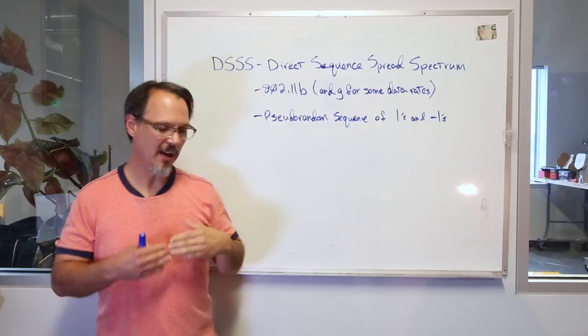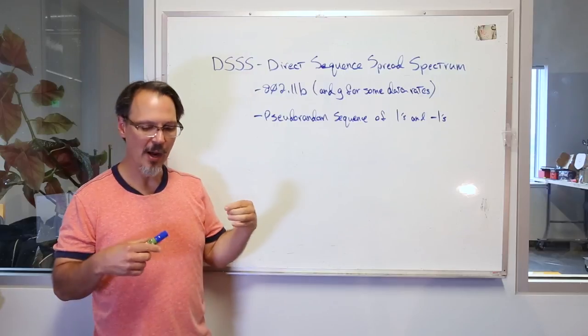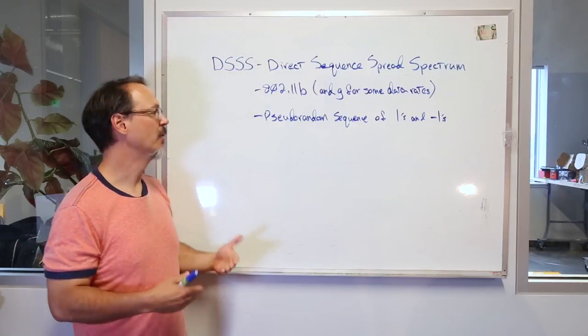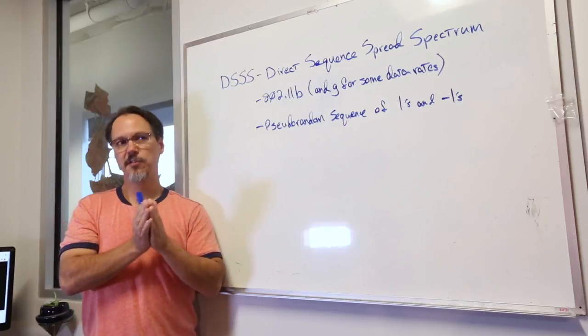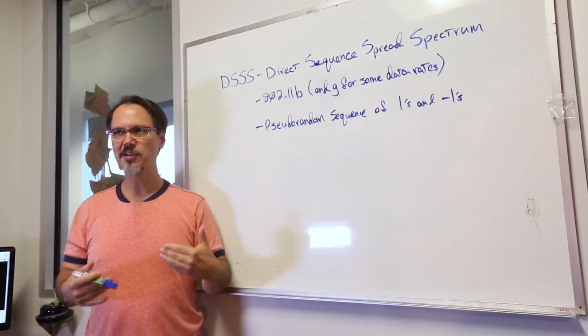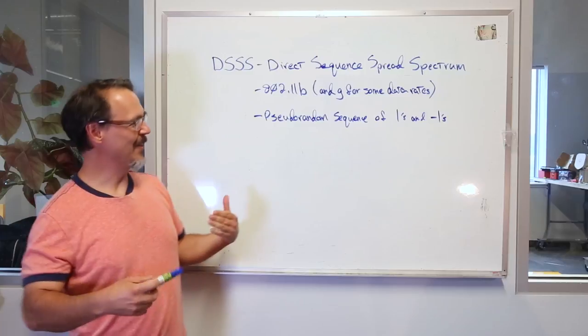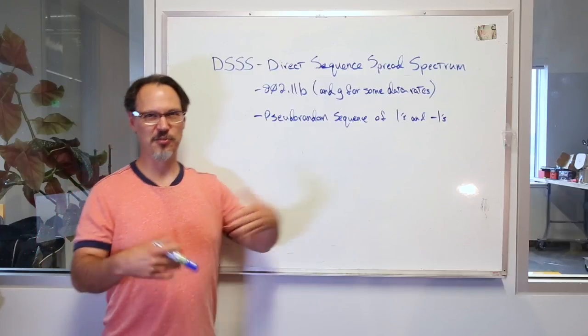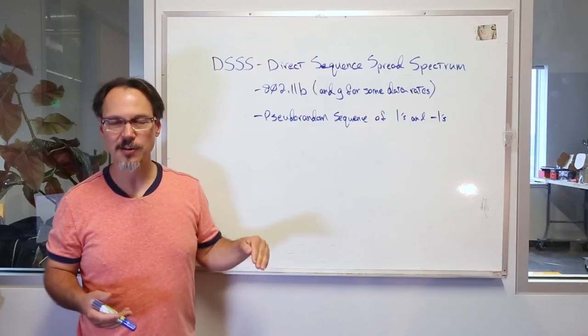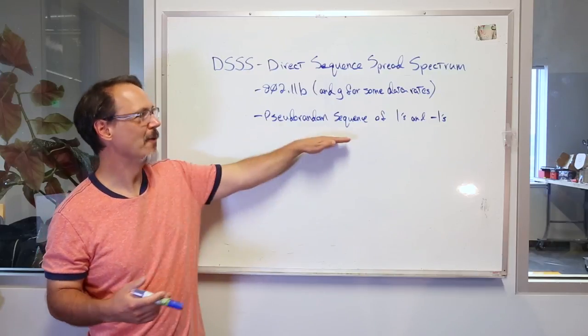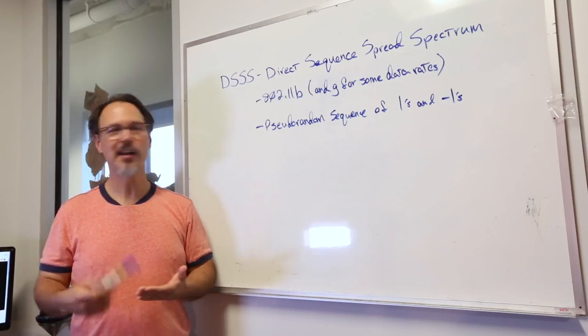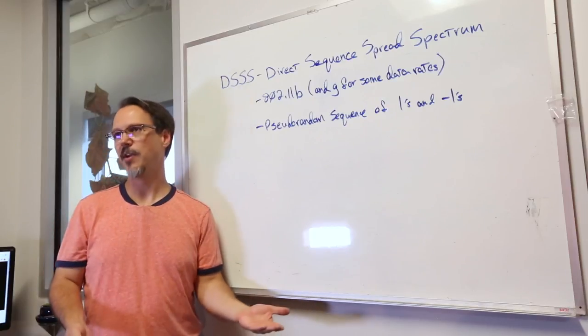The way this works is they will take the outgoing signal and they multiply it by a pseudo-random sequence of ones and negative ones at a much higher rate than the original signal. What that has the effect of doing is spreading out the data. It's a much larger bandwidth and it makes the channel basically look like noise. Any actual noise gets swamped out by the big noise that is actually the signal. Then at the receiver end, they take the same pseudo-random sequence of ones and negative ones and they decode it and they get the signal back. This has the effect of making the channel much more resilient to the actual noise that happens there.